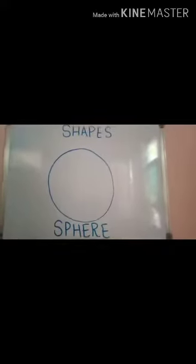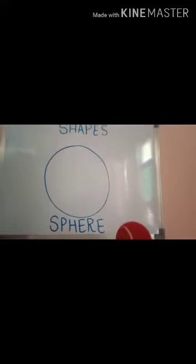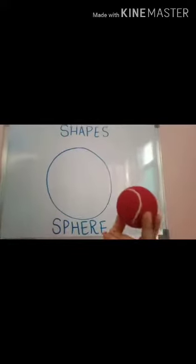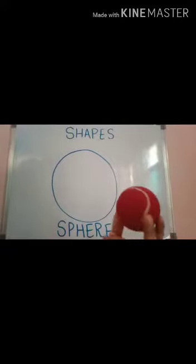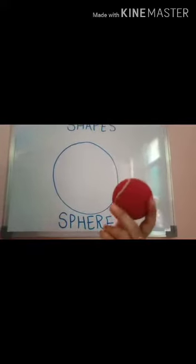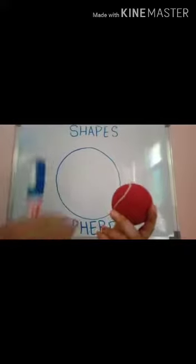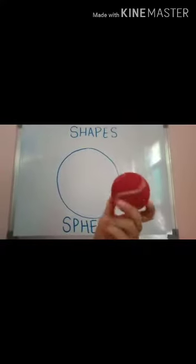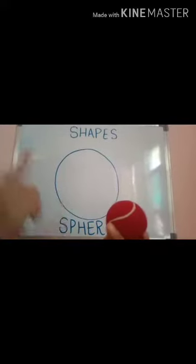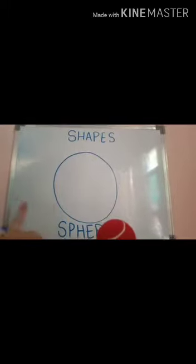Next shape is sphere. This is a ball — it looks like a sphere. A sphere has only one face. A sphere has no vertices and no edges.